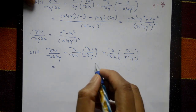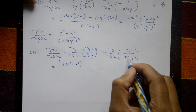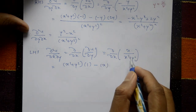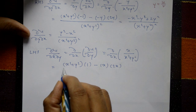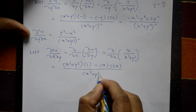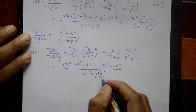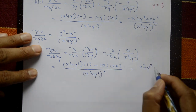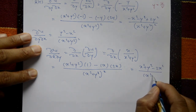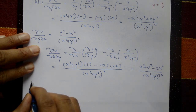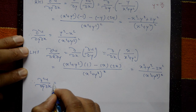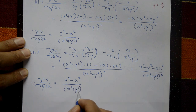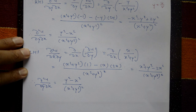Applying the quotient rule to x/(x² + y²) with respect to x: (x² + y²) times 1 minus x times 2x, all divided by (x² + y²)². This equals (x² + y² − 2x²) divided by (x² + y²)², giving (y² − x²)/(x² + y²)².